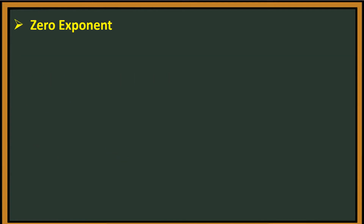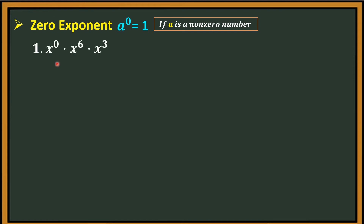Now let's have the zero exponent. In the zero exponent, a raised to 0 equals 1, if a is a non-zero number. Example 1: x raised to 0 times x raised to the 6th power times x cubed. x raised to 0 becomes 1, so that is 1 times x. Since they have the same base x, you just copy and add the exponents: 6 plus 3. The final answer is x raised to the 9th power.